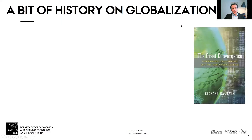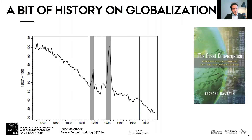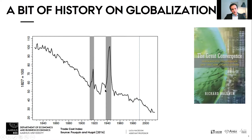There is pretty much a consensus that there are three or maybe four eras of globalization. If we look at an estimation of trade costs from 1820 to 2015 — this is a plot from an article by Foucault and Hugo, 2016, where they estimate an average trade cost — what you can see is a steady decline since the 1820s up until World War I, then an increase, subsequent reduction, increase again during World War II, and then basically back on that downward trend that began in 1820.